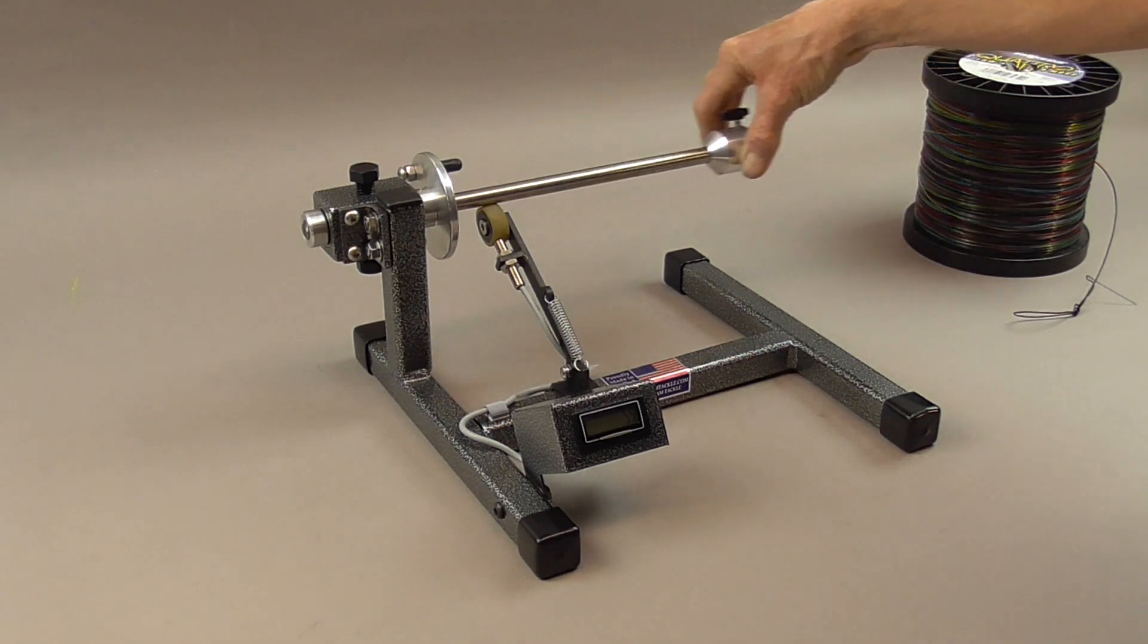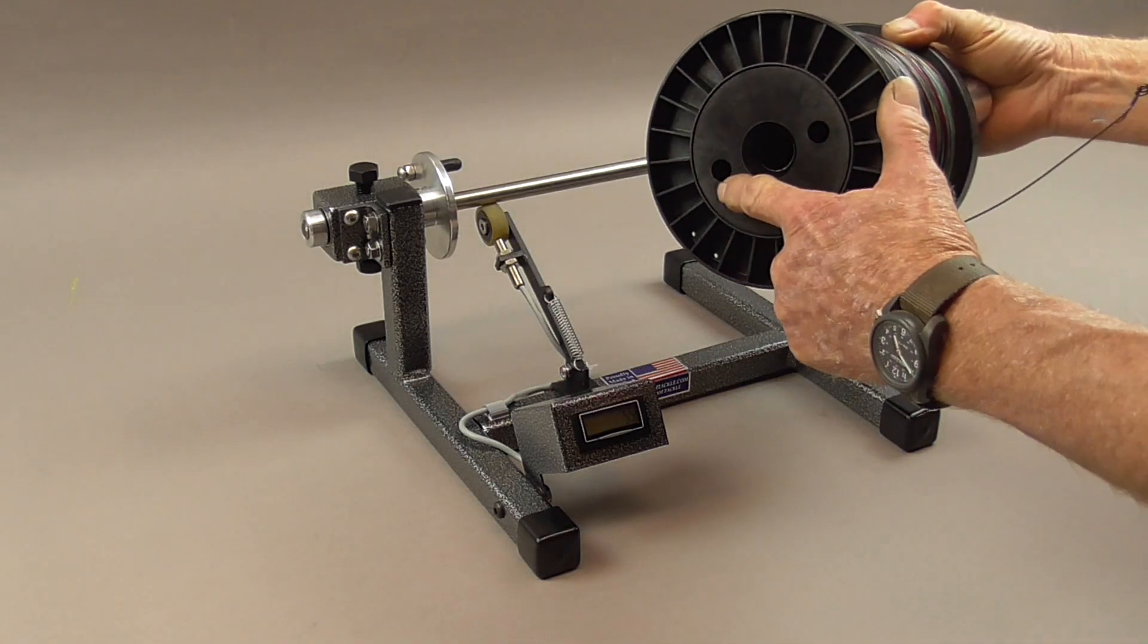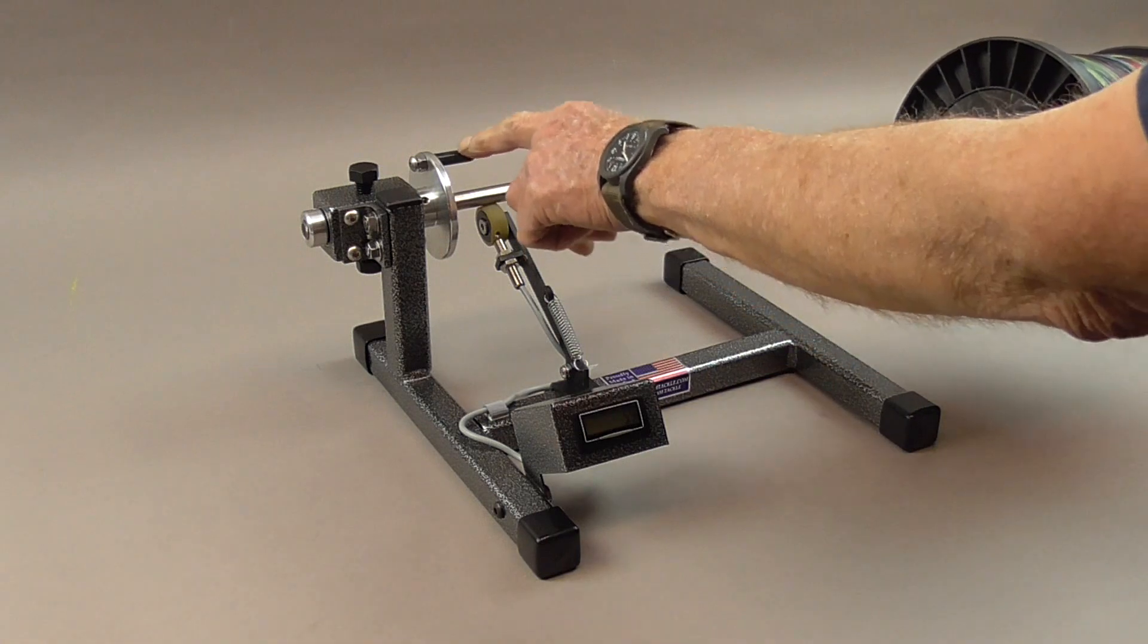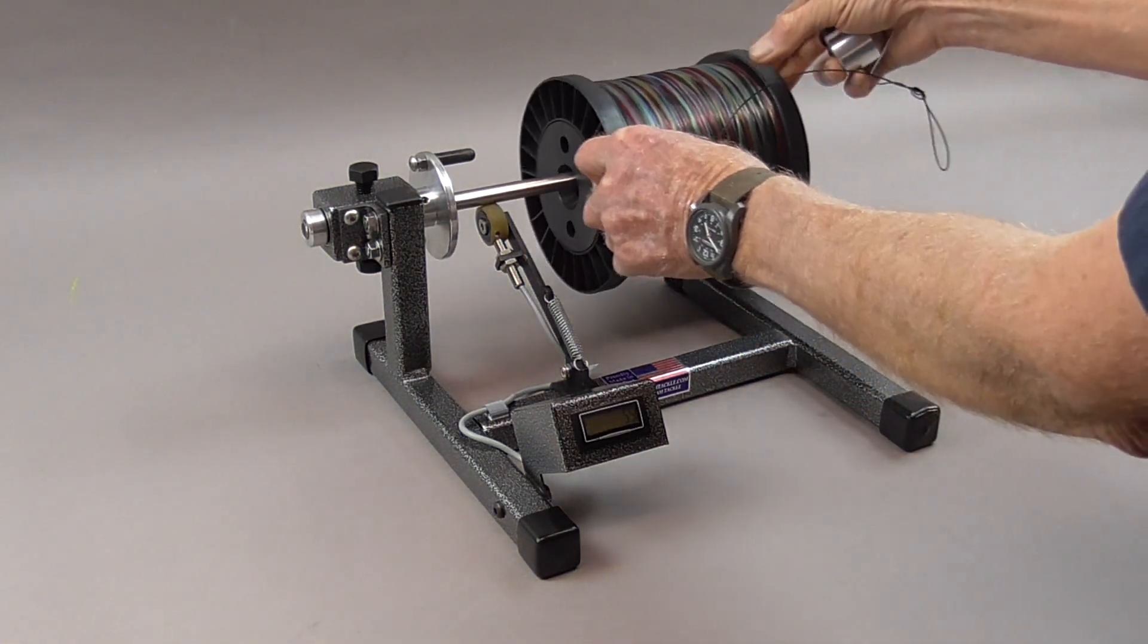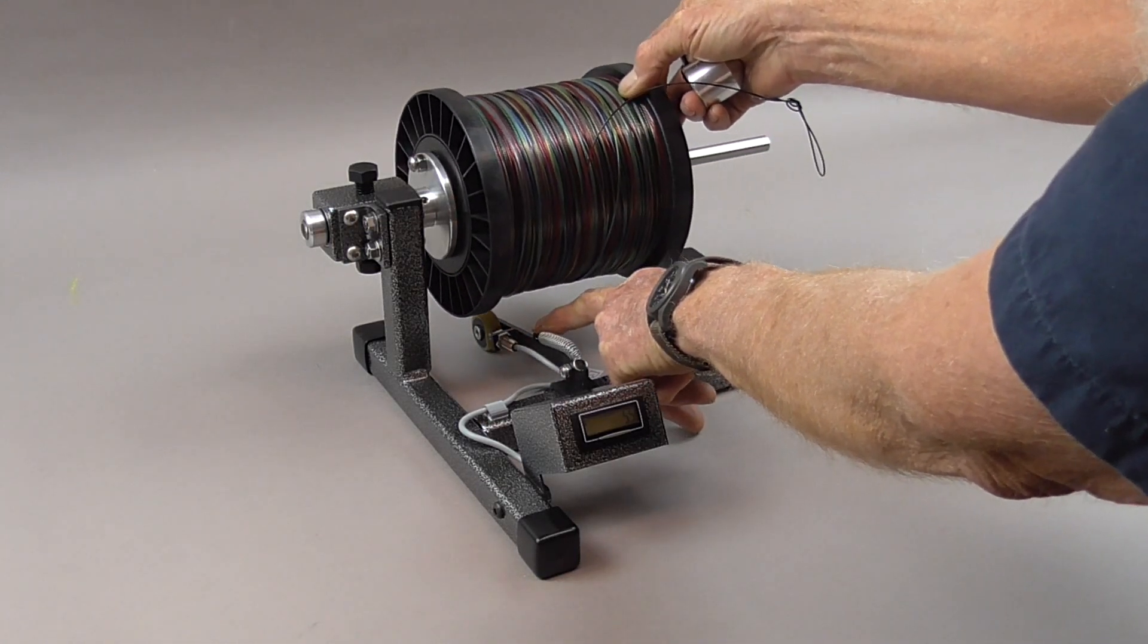Now the first thing you want to do is remove the cone. Most spools have holes in them for our engagement pin. Sometimes there's an exception to the rule, you may have to drill a hole, but 90% of the time you've got a hole already in the spool.